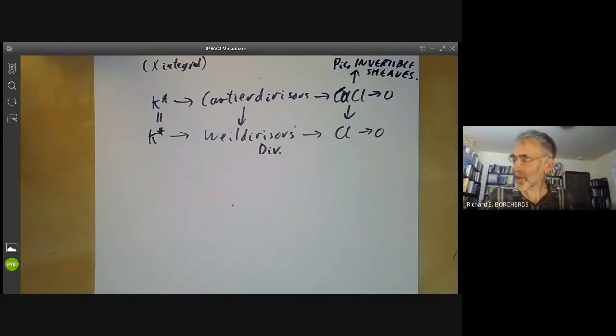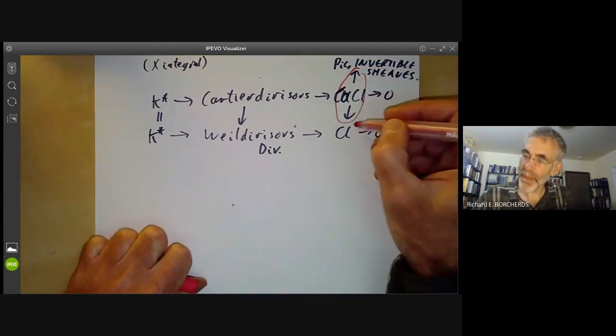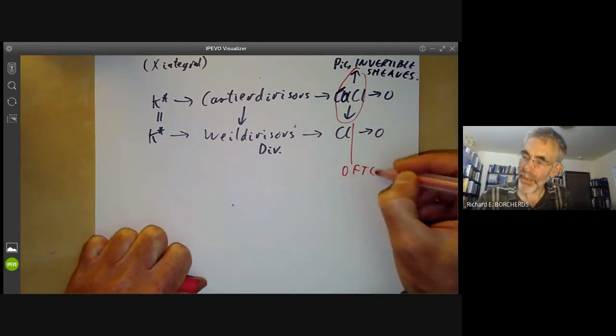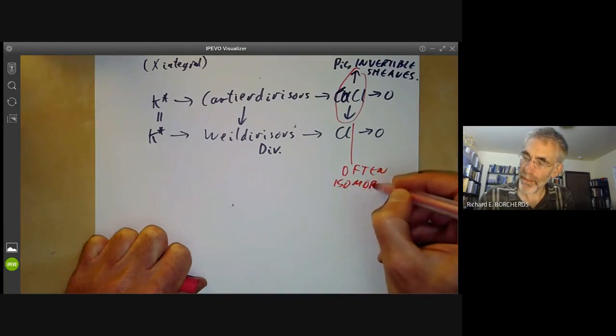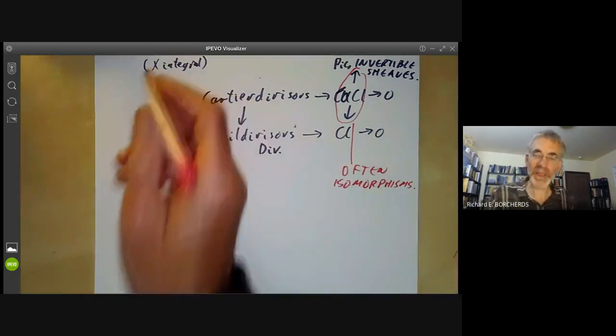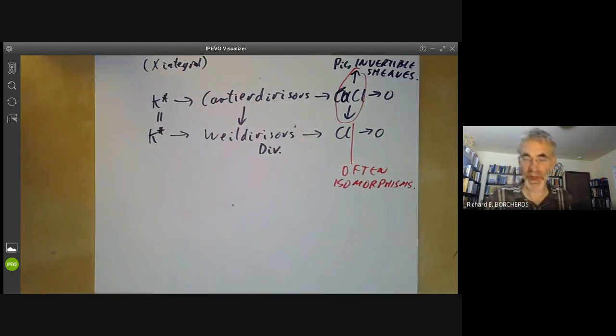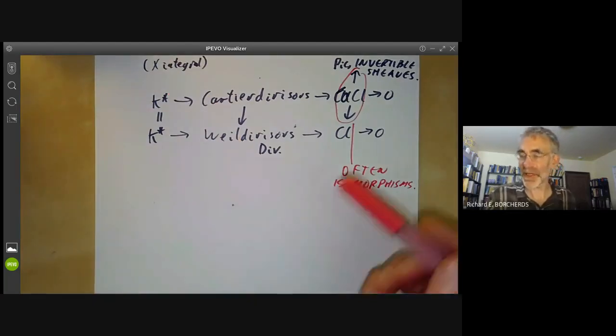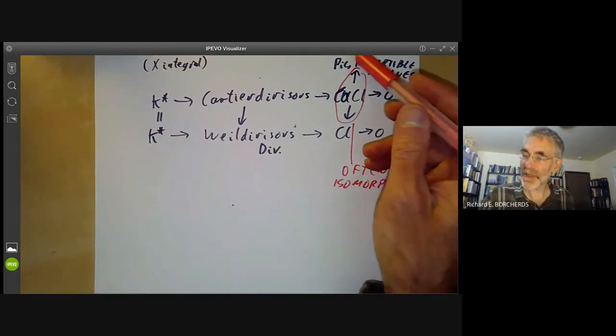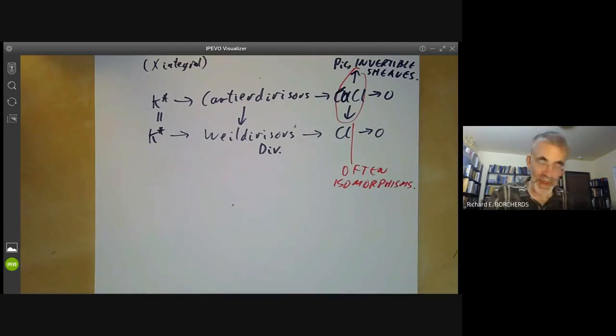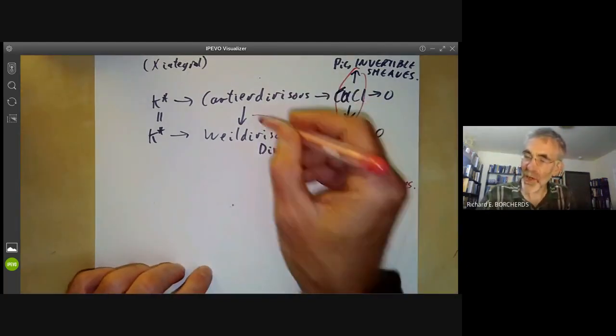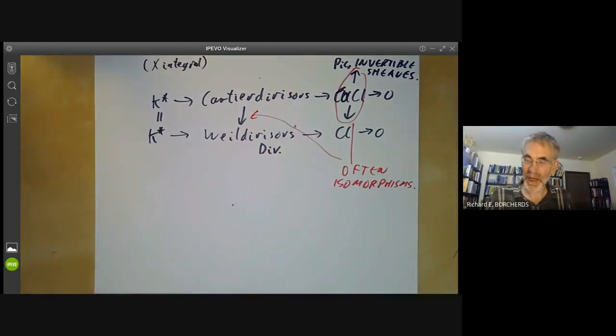Quite often, these maps are isomorphisms. Whenever the scheme is reasonably well behaved, in particular if it doesn't have singularities and has some other mild properties, then all these three groups are actually naturally isomorphic. And similarly, this map here is often, but not always, an isomorphism.